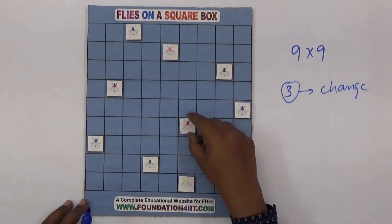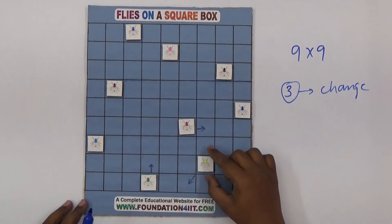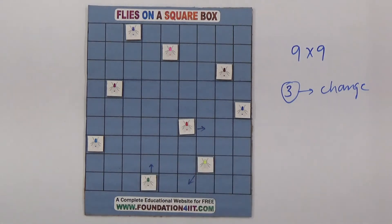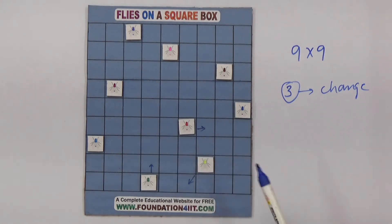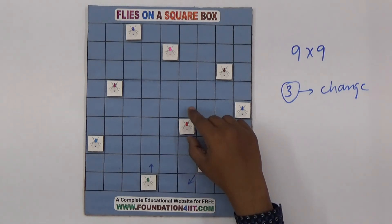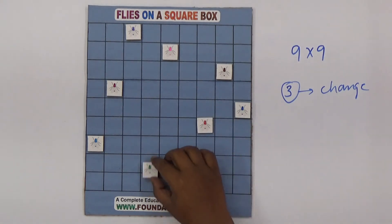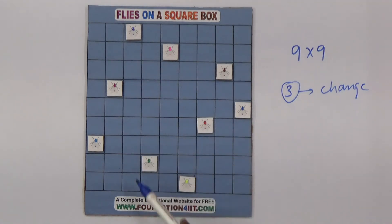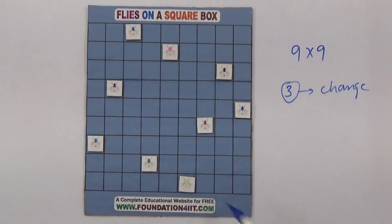The previous positions were here. Even in the previous arrangement there was no interaction in rows, columns, or diagonal. Similarly after changing position — one, two, and this one moved here — even with these three flies changed, there is no interaction in rows, columns, or diagonal. That is the logic.